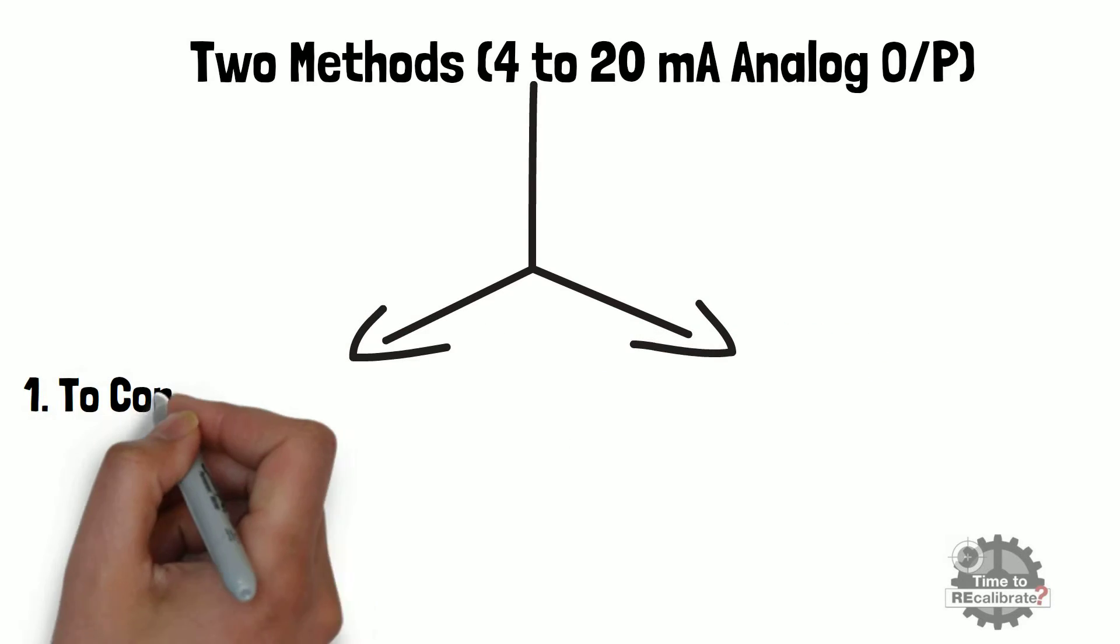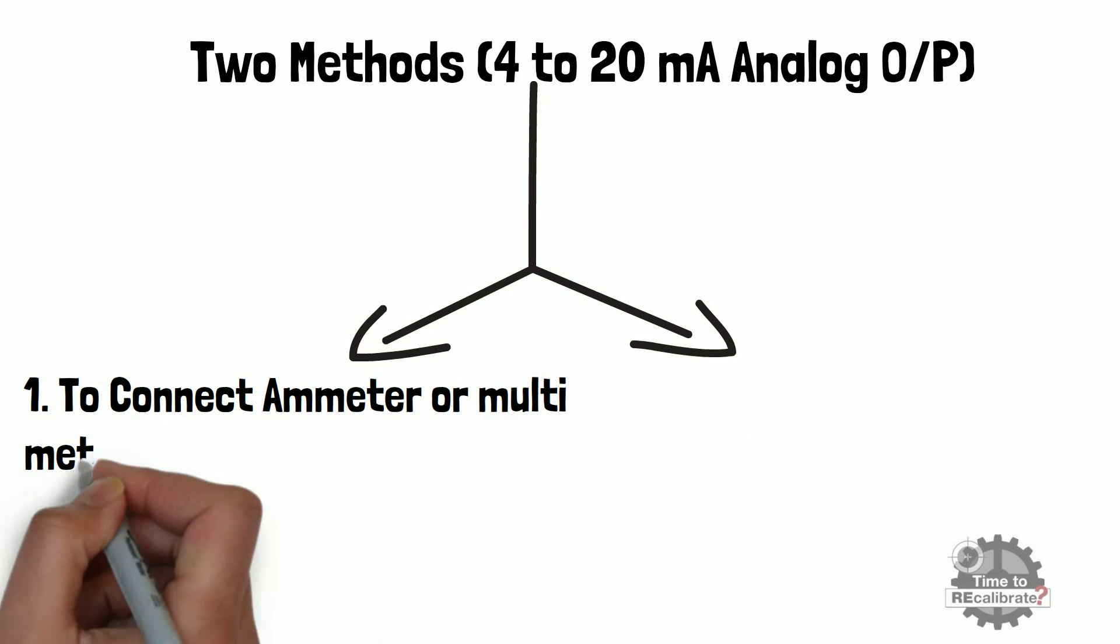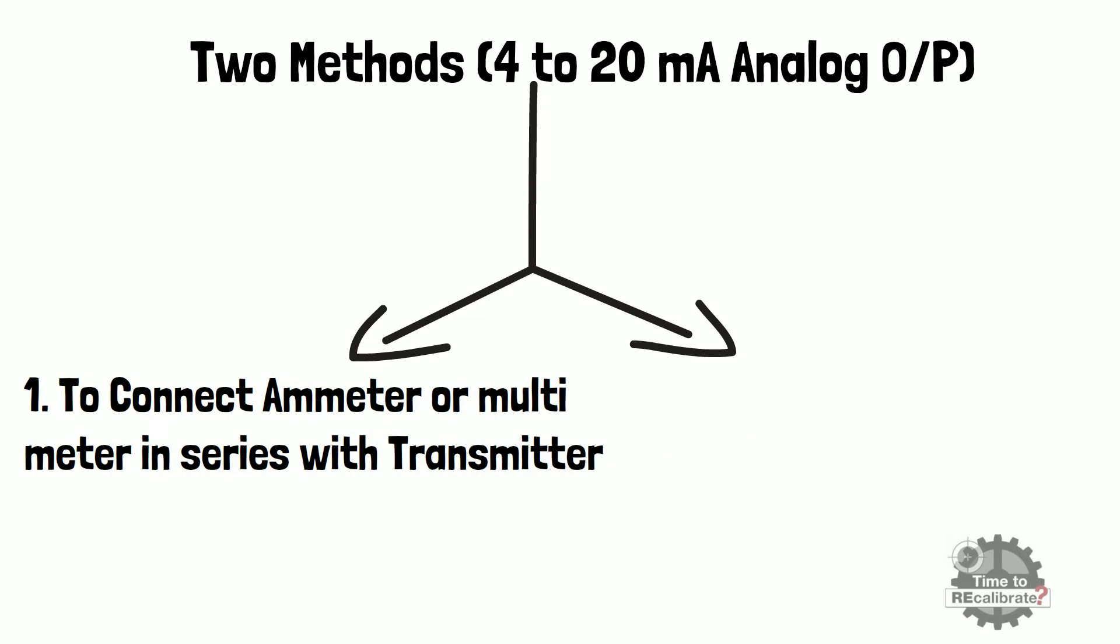In first method, we need to connect ammeter or multimeter in series with transmitter to measure analog output of transmitter.